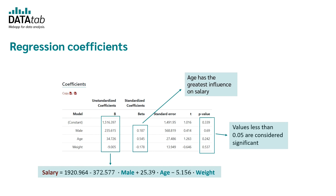The next table is of great importance because it shows the regression coefficients. In this table you find all the independent variables, the unstandardized coefficients B, the standardized coefficients beta, the standard error, and the t and p-value. The unstandardized coefficients B are important for the regression equation. The standardized coefficients beta are important for interpreting results because you can compare them to each other. For example, age has the greatest influence on salary because it has the highest beta coefficient. The p-value tells you if your coefficients are significant — if the p-value is smaller than 0.05, you can consider your coefficient as significant.